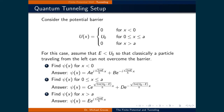In region 1, we get a wave function solution which represents the incoming particle traveling to the right, as well as the reflected particle bouncing off the barrier. In region 2, inside the potential, there are two decaying exponentials.